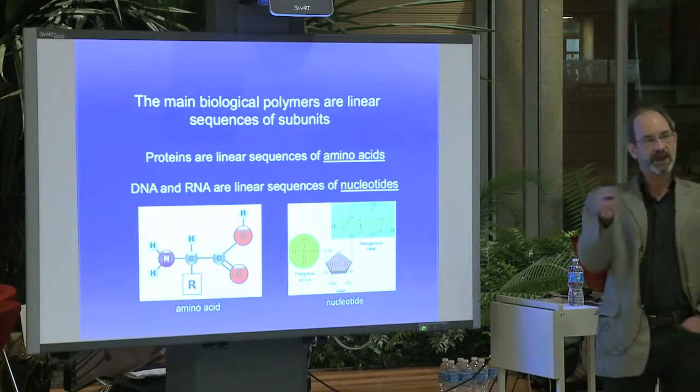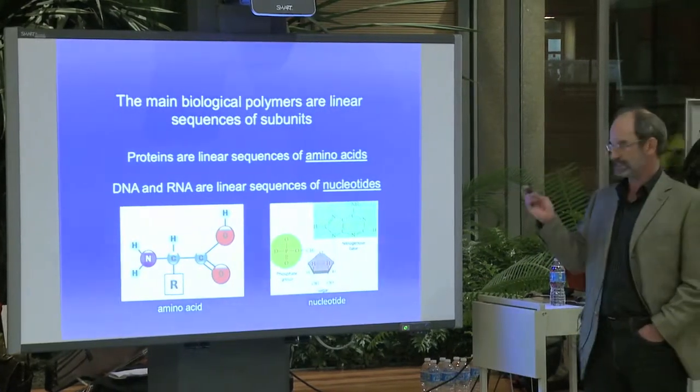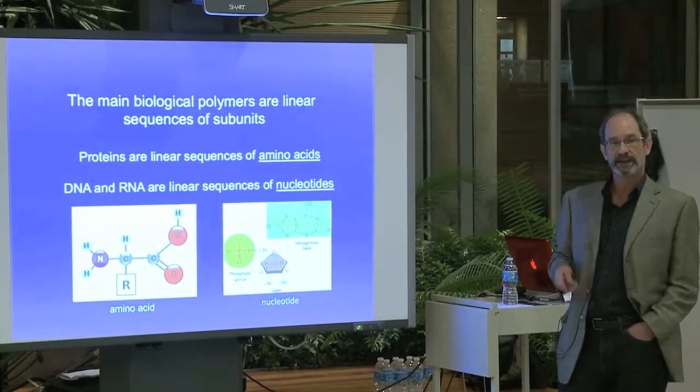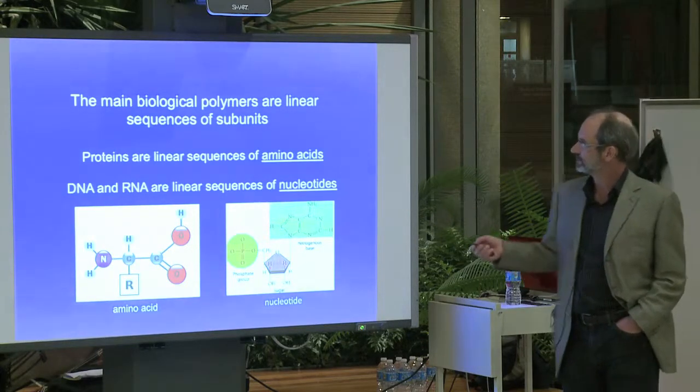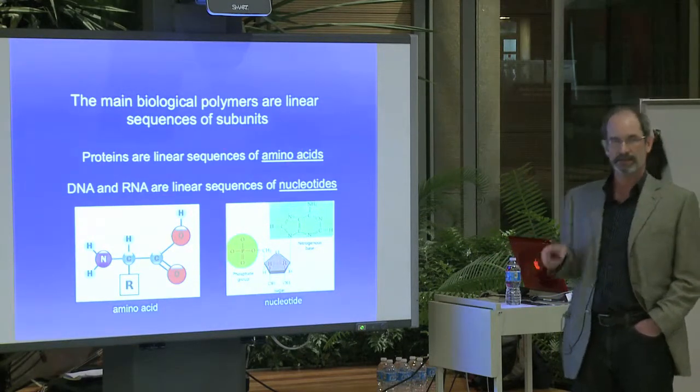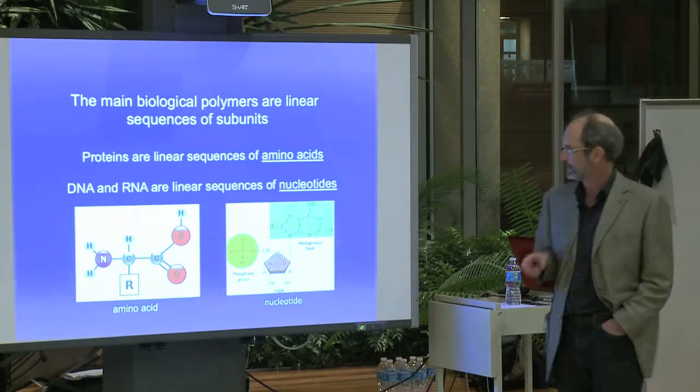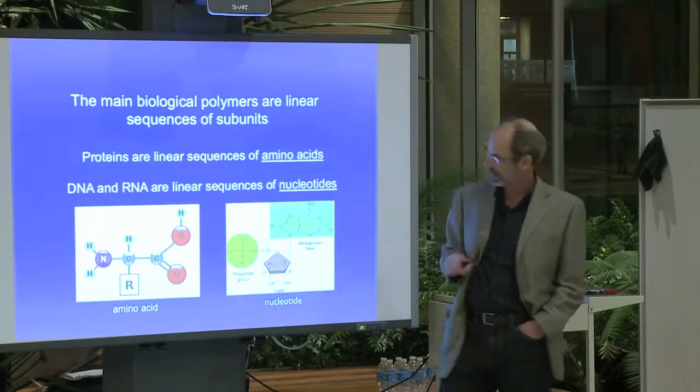So let's talk about those. There's actually a number of different biological polymers, but I'm just going to focus on two because you just can't do everything in one night. So let's talk about proteins and about DNA and RNA. So proteins are linear sequences of amino acids. And I'll show you a picture in a minute to tell you what I mean by a linear sequence. But let's focus on this part, an amino acid. What's an amino acid?